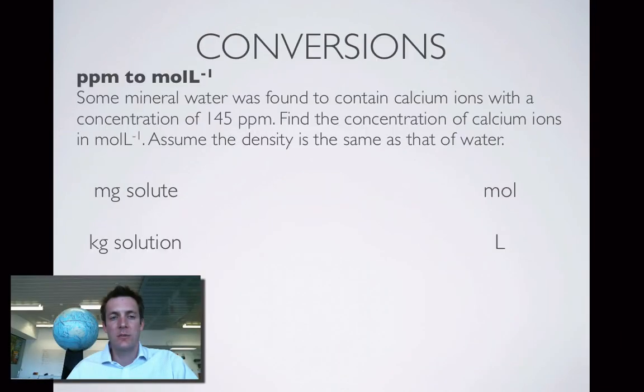Okay, so here's an example. We are told that we've got some mineral water and that the calcium ions in it have a concentration of 145 parts per million. What does that mean? Well, that means that the number of milligrams of solute divided by the number of kilograms of solution is 145. So for example, I might have 145 milligrams of solute in every 1 kilogram of solution.